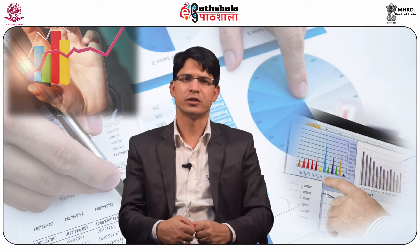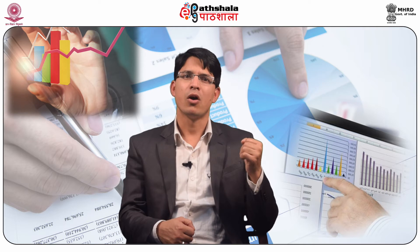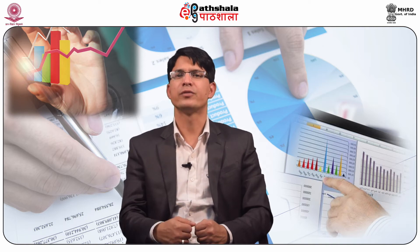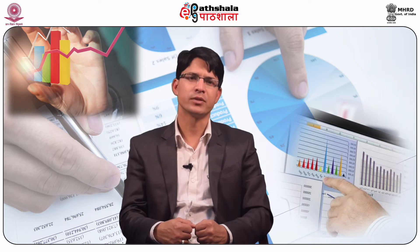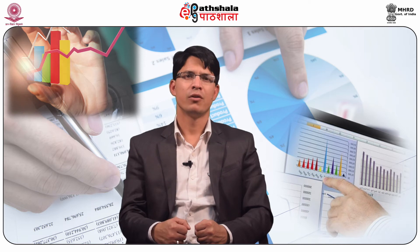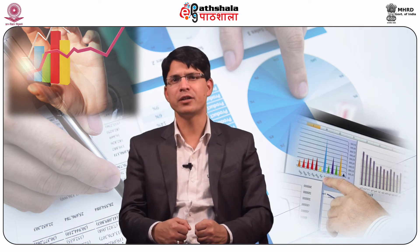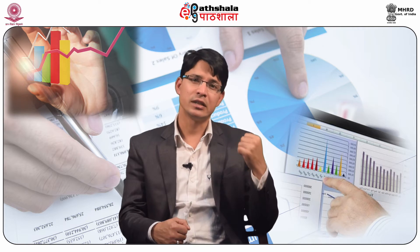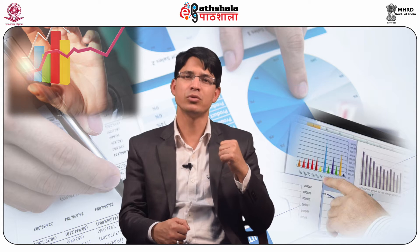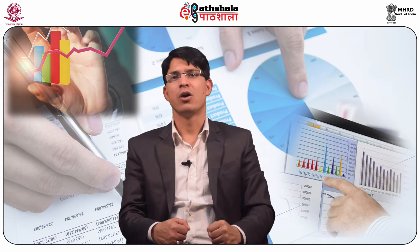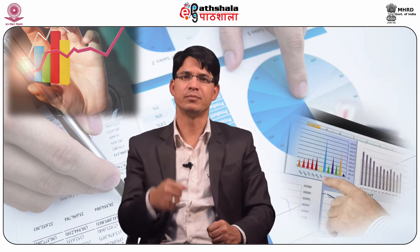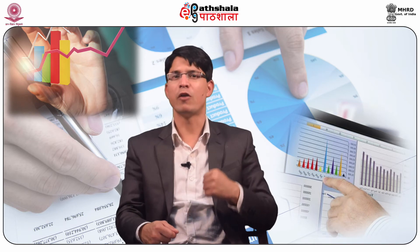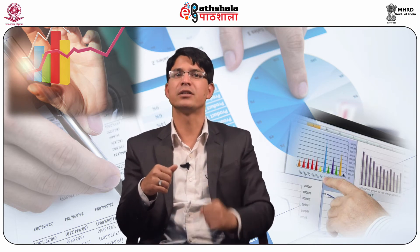Thus, in the books of the sole trader, a firm, or limited company, only business transactions are recorded and no note is taken of personal transactions of the sole proprietor. For example, if the proprietor invests rupees 6 lakhs into the business, it will be deemed that he has given that money as a loan, shown as a liability in the books of the firm. Cash account will be debited and proprietor's capital account will be credited. On withdrawal for personal use, the proprietor's capital account will be debited and cash account will be credited.